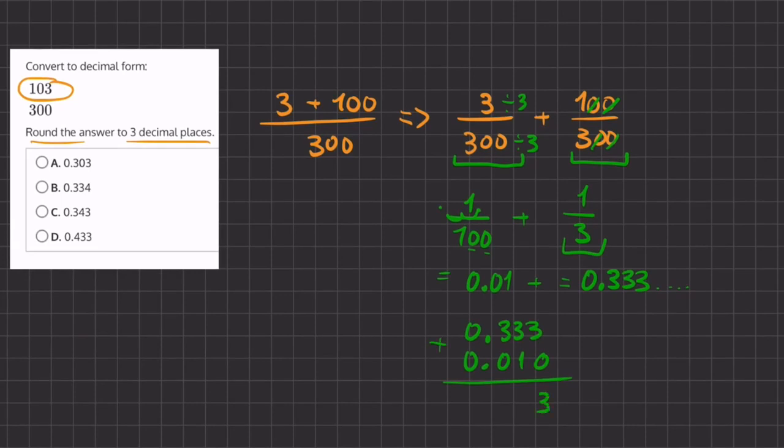So we're going to have 3, 4, and 3. We're going to keep our decimal place. And so we have 0.343 as our decimal that is equivalent to 103 over 300.